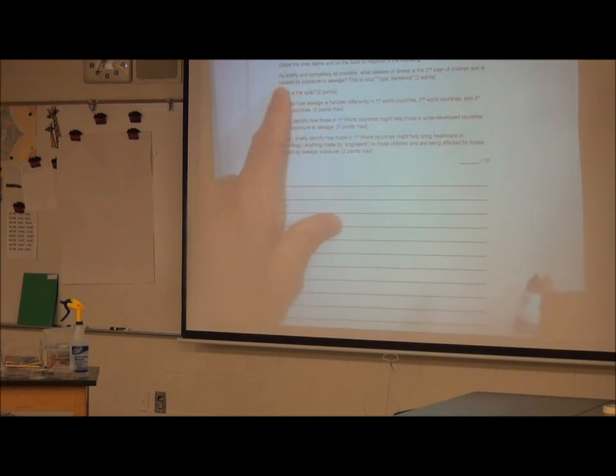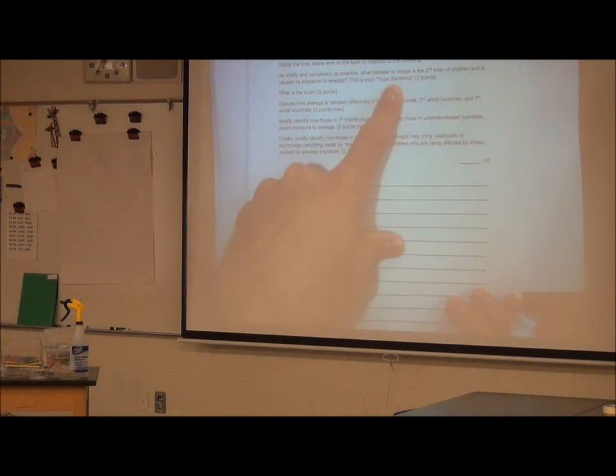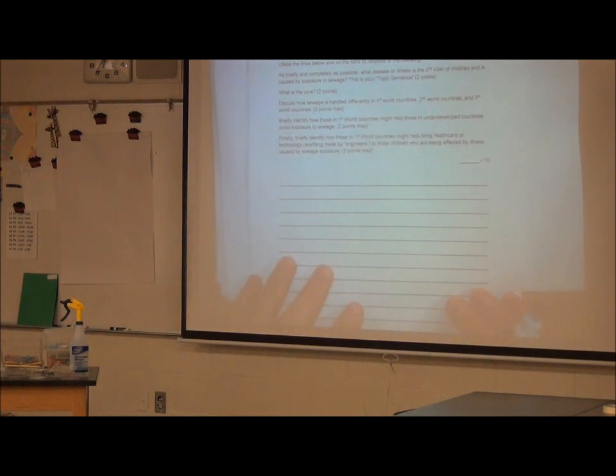So the first thing you're going to do is your topic sentence, which is going to be to identify the disease or illness, which is the second killer of children worldwide. Okay? Which I just gave you the answer to that. What is the cure? Discuss how sewage is handled differently in first, second, and third world countries. That kind of leads to children and adults getting this disease. Dysentery. And then the last two are briefly identify how those of us in first world countries can help those in underdeveloped countries avoid exposure to sewage. And then the last thing is how we might bring health care to these people.